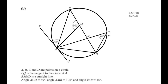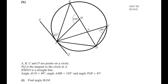A, B, C and D are points on a circle. PAQ is the tangent to the circle at point A. B, M, N, D is a straight line. Angle ACD is given as 49 degrees, angle AMB is 105 degrees, and angle PAB is 45 degrees. Find the angle BAM.